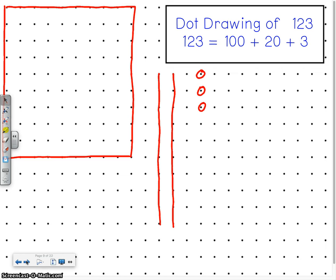Awesome job. I really like that you put spaces in between the different place values because it really helped me to see 100 plus 2 tens, which I know is 20, plus 3.